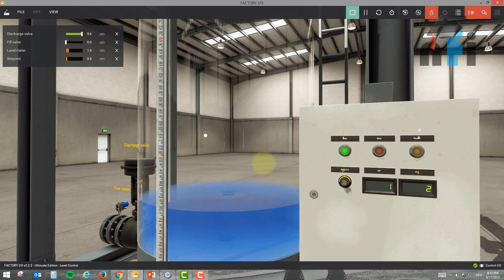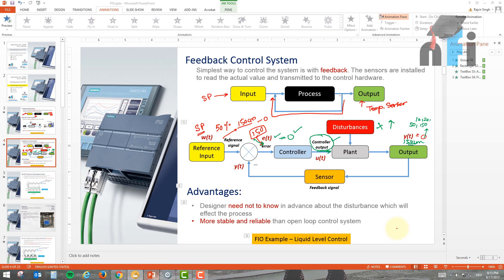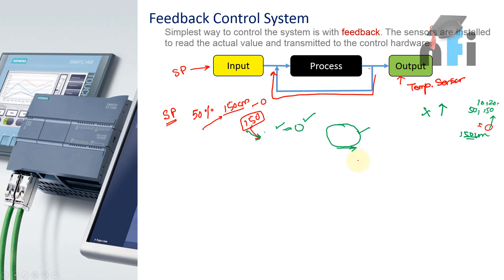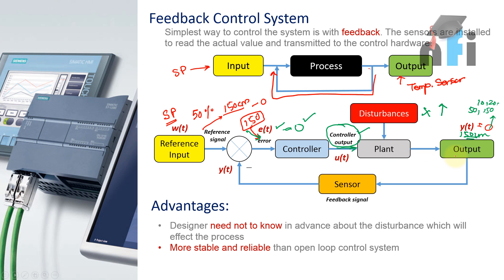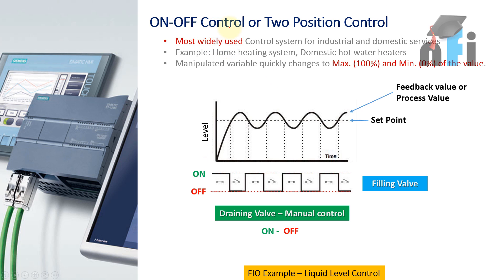This was about automatic control systems and feedback control using the level meter. In the next lesson, we will talk about on-off type control systems and generate a logic in Siemens TIA using SCL for on-off or two-position control. See you in the next video.